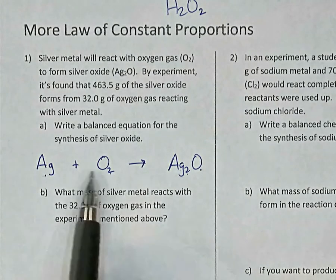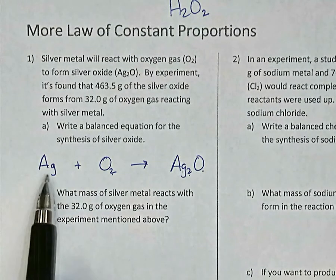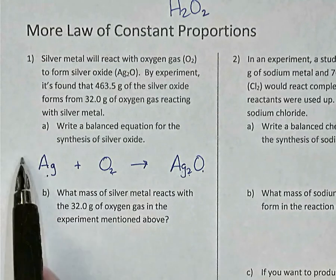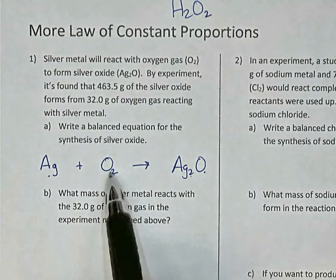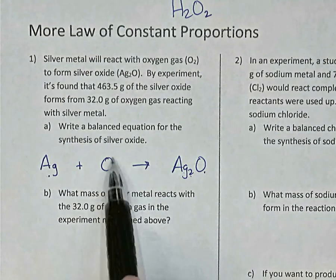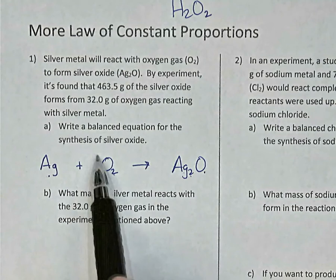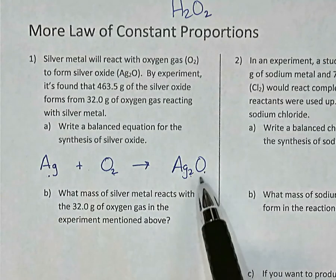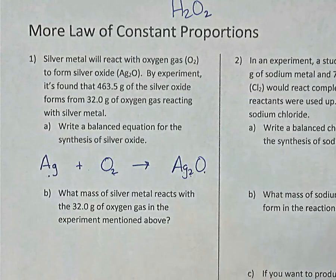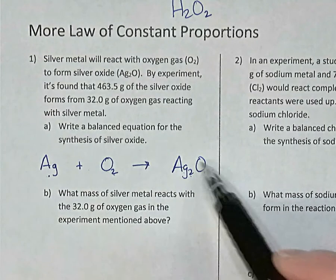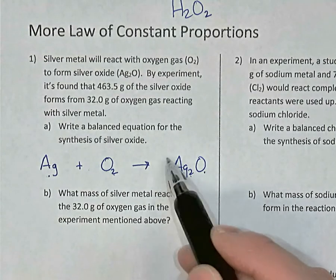What you can do is put numbers in front — coefficients. Instead of 1 atom of silver, we could say 2, 3, or 4. Instead of 1 molecule of oxygen — remember a molecule is where you have 2 or more atoms bonded together — we could have 2 or 3 molecules of oxygen. And instead of 1 molecule of silver oxide, we could have 2, 3, or 4.